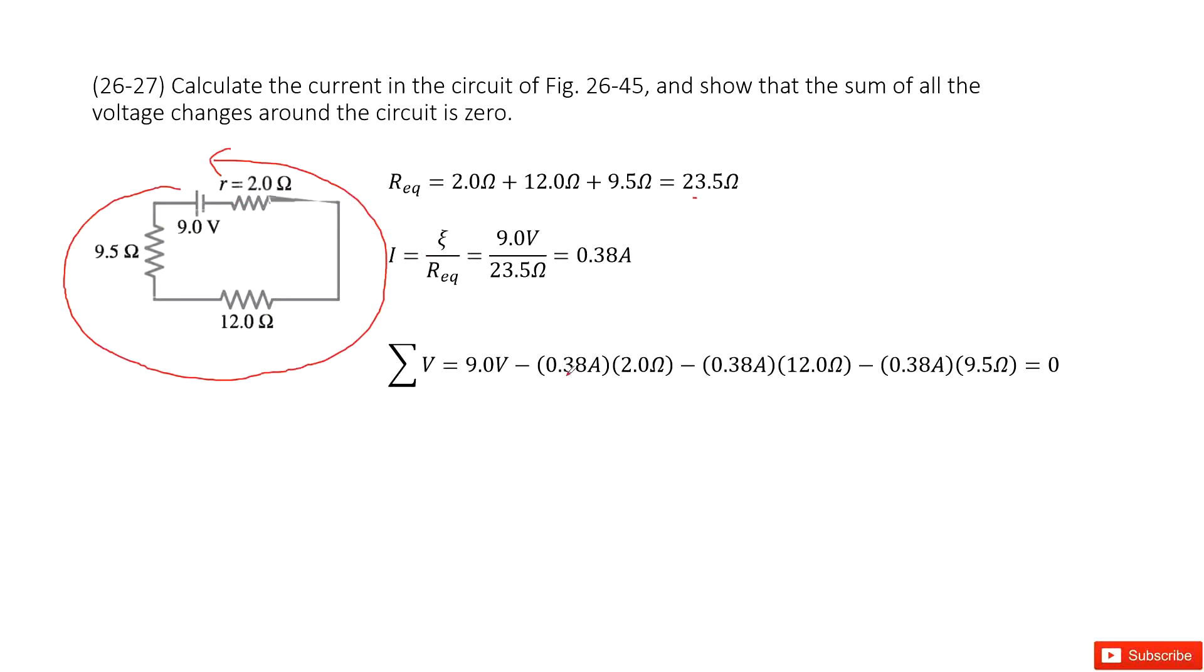So first one it goes through 0.38 with 2 ohms, decreases. Then it goes through 12 ohms, decreases. Goes through the 9.5 ohms, decreases. So we put a negative sign there. And finally we add them together. We find the sum of all voltage changes equal to zero. Thank you.